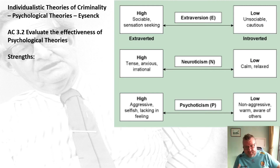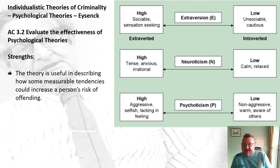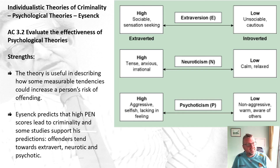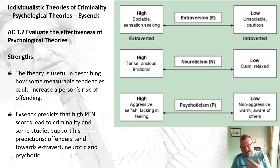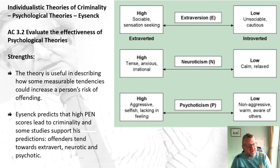Let's evaluate. As a strength, the theory is useful in describing how some measurable tendencies could increase a person's risk of offending. Eysenck predicts that high PEN scores lead to criminality, and some studies support his predictions — offenders do generally tend to be extrovert, neurotic, and psychotic, and definitely psychotic and neurotic.